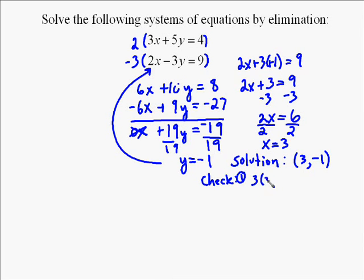So we're going to have 3 times 3 plus 5 times negative 1. We want to see if that equals 4. So 3 times 3 is 9, plus negative 5. Yeah, 9 plus negative 5 does equal 4. That's a true statement. So we found a solution to that problem. Now we've got to see, is it also a solution to the other equation? If it is, then we know it's our answer.